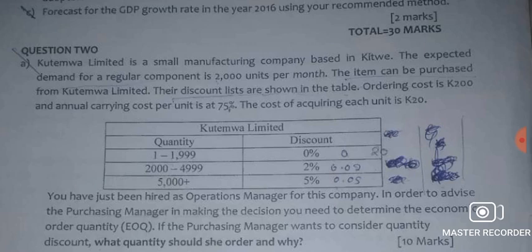The item's discount lists are shown in the table. Ordering cost is 200 kwacha and annual carrying cost per unit is 75 percent of the cost of acquiring each unit, which is 20 kwacha. The table shows quantity ranges and corresponding discounts. You have been hired as operations manager to advise the purchasing manager on the economic order quantity considering quantity discounts.